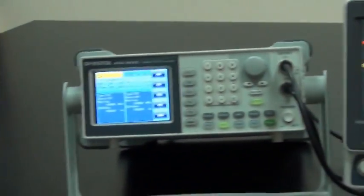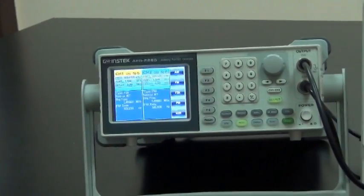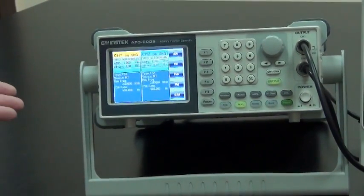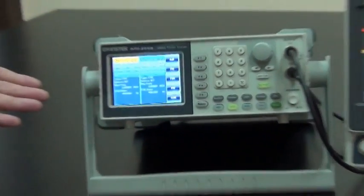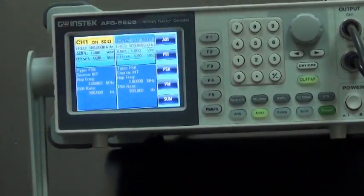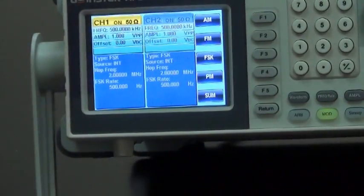First, produce an FSK signal from AFG-2225. Frequency is 500 kHz, 2 MHz frequency hopping, and FSK rate is 500 kHz.